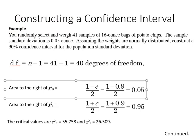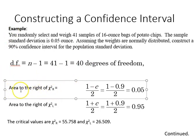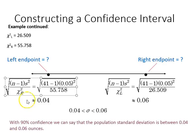Here's an example using those steps. We randomly select and weigh 41 samples of 16-ounce bags of potato chips with a sample standard deviation of 0.05. Assuming the weights are normally distributed, we construct a 90% confidence interval. Degrees of freedom equal n minus 1, giving us 40. The area to the right for chi-square R is 1 minus 0.9 divided by 2, which is 0.05, and the area to the right for chi-square L is 0.95. The critical values from the table are 55.758 and 26.509. Using those chi-square values, the left and right endpoints of the confidence interval work out to 0.04 and 0.06.